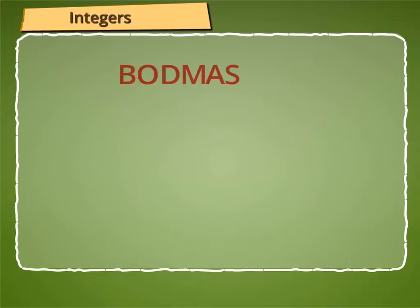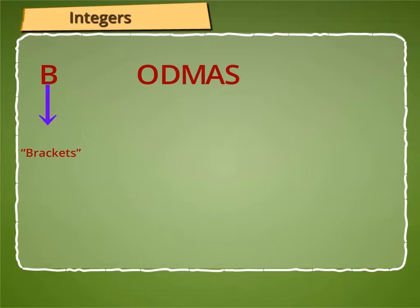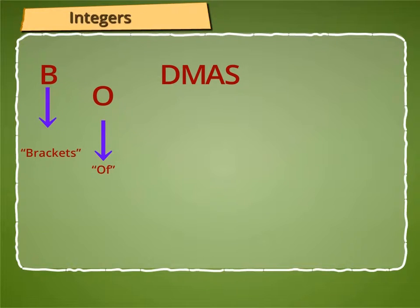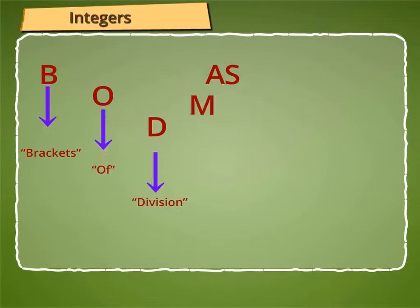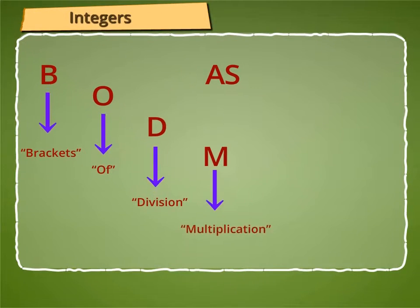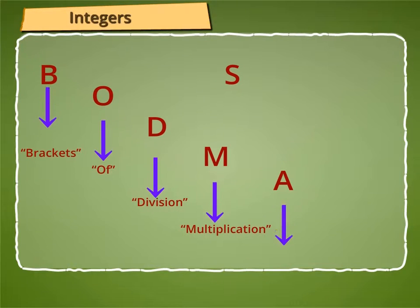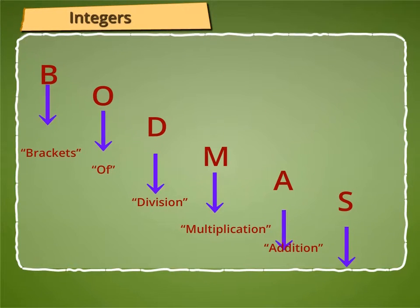The letters of the word BODMAS: B stands for brackets, O stands for OF, D stands for division, M stands for multiplication, A stands for addition, and S stands for subtraction.